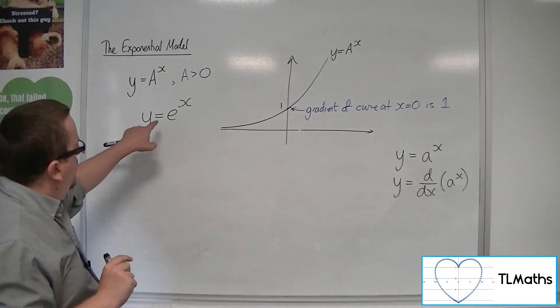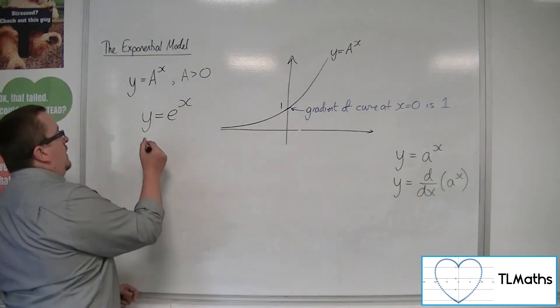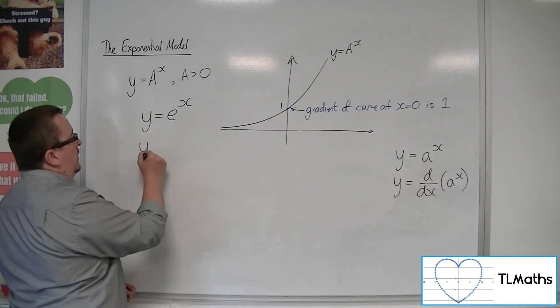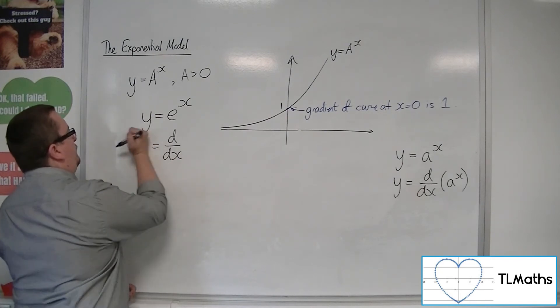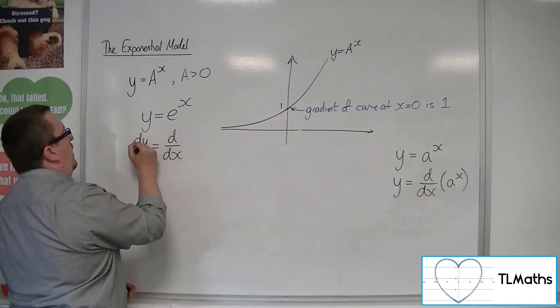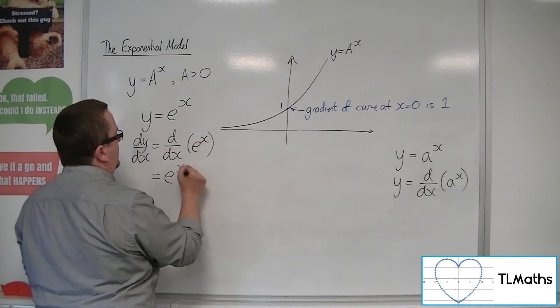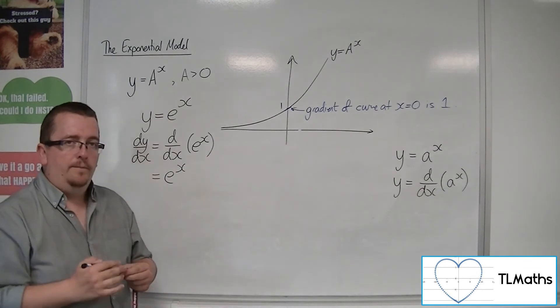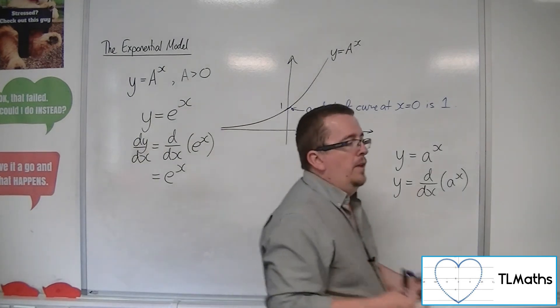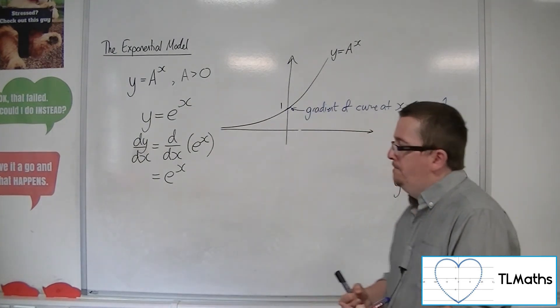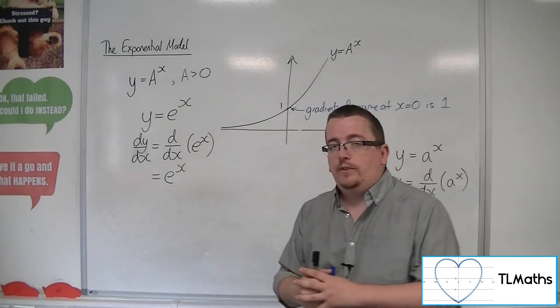So the gradient function of y equals e to the x is actually just e to the x. So we say that dy by dx, the gradient function of e to the x, is just e to the x. So dy by dx is what we write to mean the gradient function. So actually what we say is it differentiates to itself.